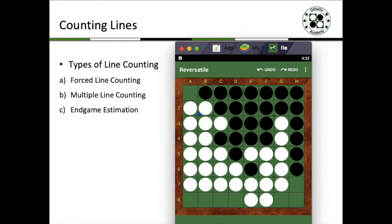Now let's talk about counting lines. The different types of line counting are forced line counting, multiple line counting, and endgame estimation.